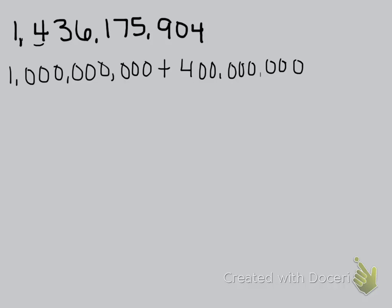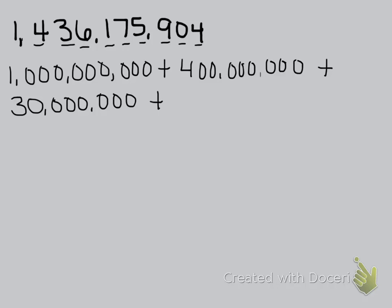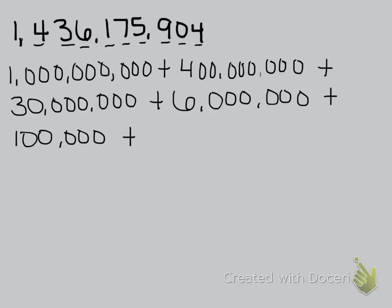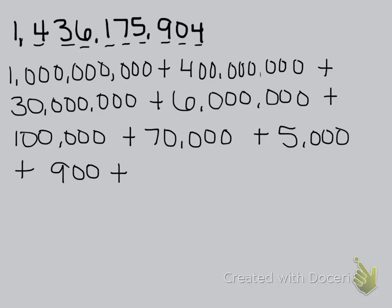You can count to see how many zeros you need — after the 4 there are 8 digits, so I need 8 zeros after the 4. Plus the 3 is in the 10 millions place, so it has a value of 30 million. Plus the 6 is 6 million. Plus 100,000. The 7 is in the 10,000 place, so it's worth 70,000. Plus 5,000. Plus 900. We're not going to put anything for the zero, so we skip it and go to the 4. The 4 is in the ones place, and 4 times 1 is 4, so it has a value of 4.